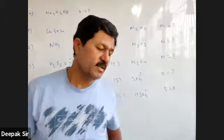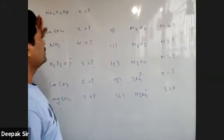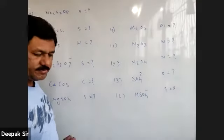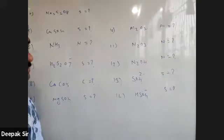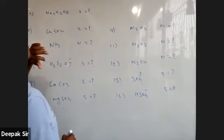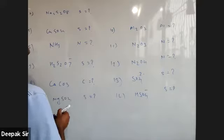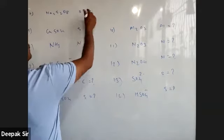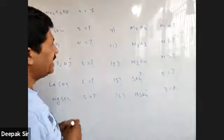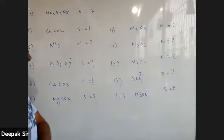Everyone please come up with the answer. What is the oxidation number of sulfur here? The student answers: sulfur has seven. The teacher confirms: yes, are you sure? Yes, sir. Very good, sulfur has oxidation number seven. Next one.